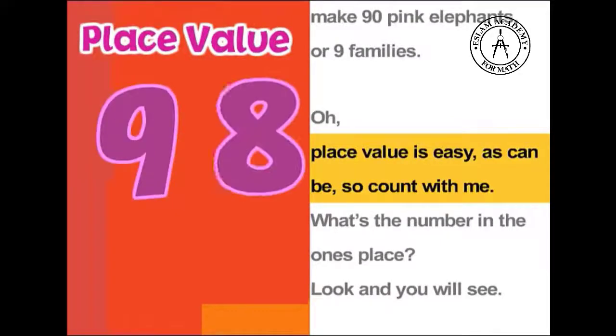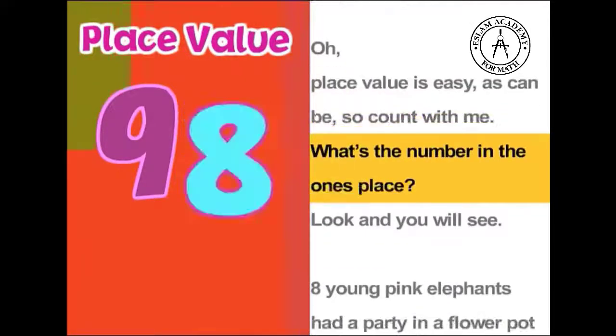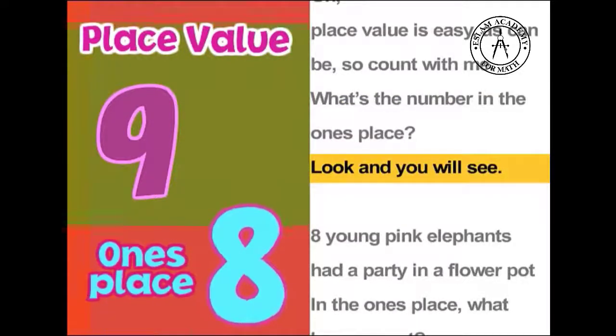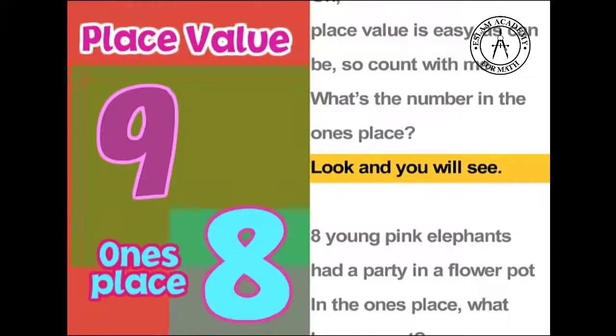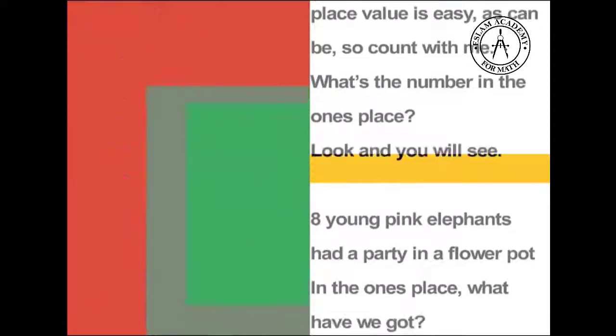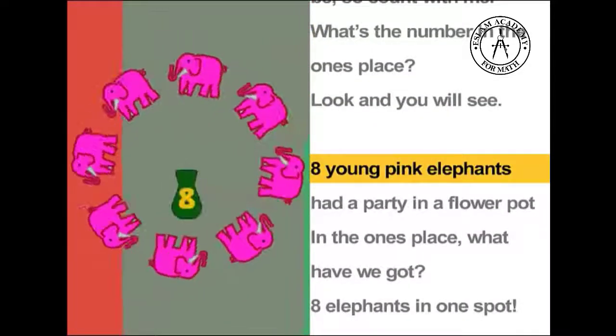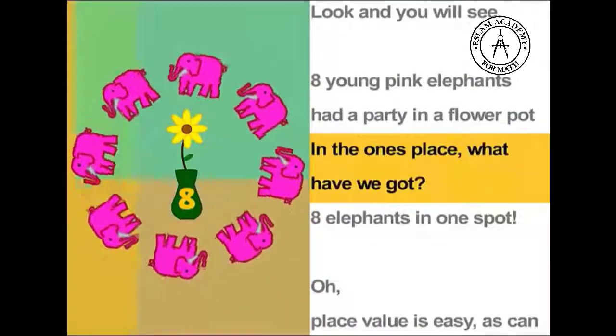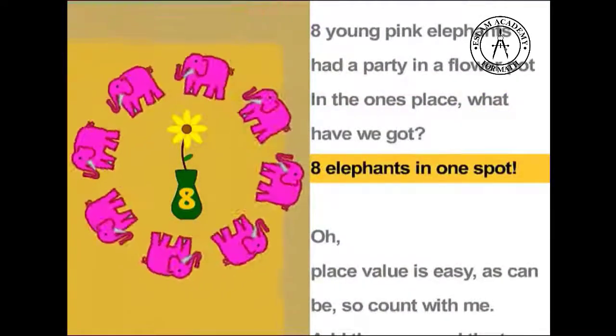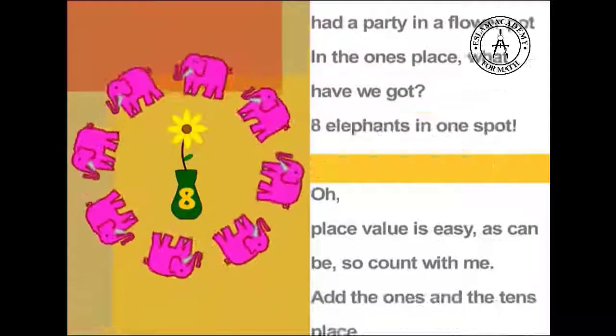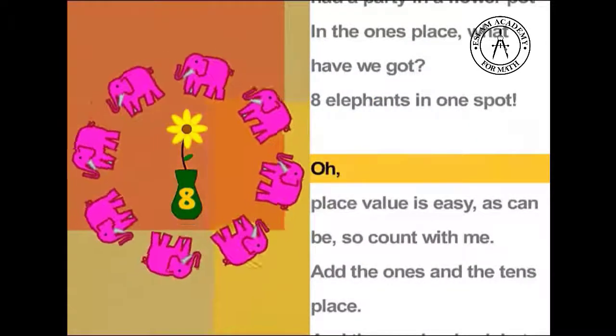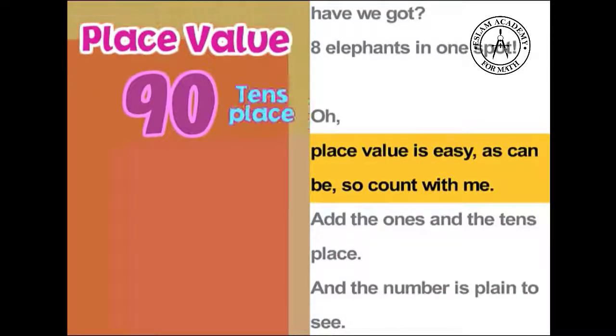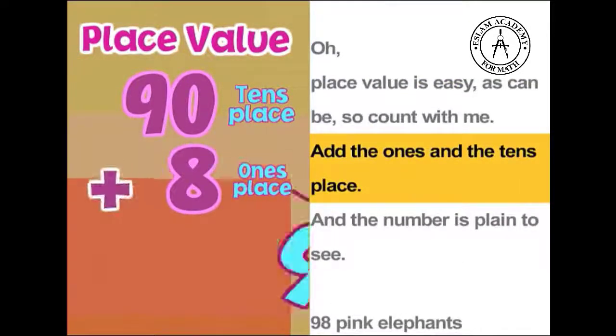Oh, place value is easy as can be, so count with me. What's the number in the ones place? Look and you will see. Eight young pink elephants had a party in a flower pot. In the ones place, what have we got? Eight elephants in one spot.